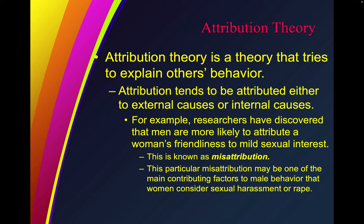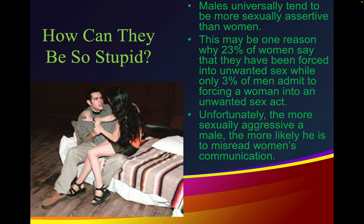Attribution theory is a theory that tries to explain others' behavior. Attribution tends to be attributed either to external or internal causes. Researchers have discovered that men are more likely to attribute a woman's friendliness to mild sexual interest — this is known as misattribution. This particular misattribution may be one of the main contributing factors to male behavior that women consider sexual harassment or rape. Males universally tend to be more sexually assertive than women, and the more sexually aggressive a male, the more likely he is to misread women's communications.